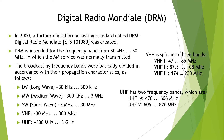In the year 2000, a further digital broadcasting standard called DRM — Digital Radio Mondiale — was created. The standard is ETSI TS 101 980. DRM is intended for the frequency band from 30 kHz to 30 megahertz, in which AM services were not normally transmitted. The broadcasting frequency bands were basically divided in accordance with their propagation characteristics.